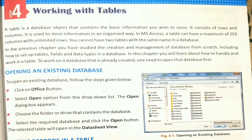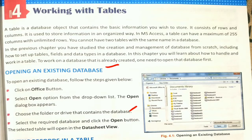Opening an existing database: to open an existing database, follow these steps. Click on the Office button and select the Open option from the drop-down list — the Open dialogue box will appear. Choose the folder or drive that contains the database, then select the required database and click the Open button. The selected table will open in Datasheet View.